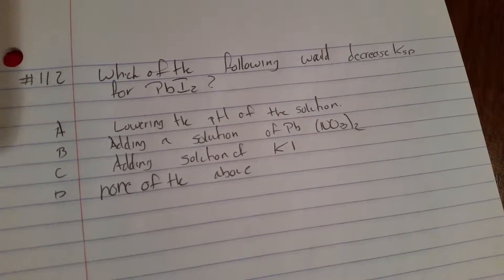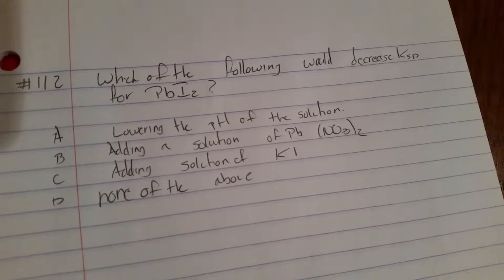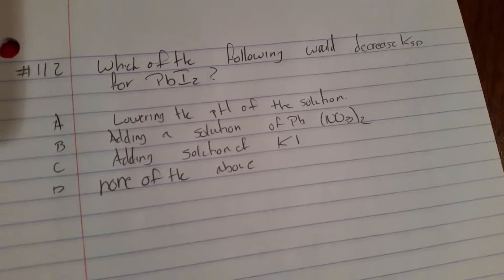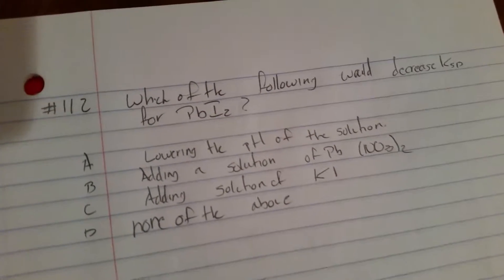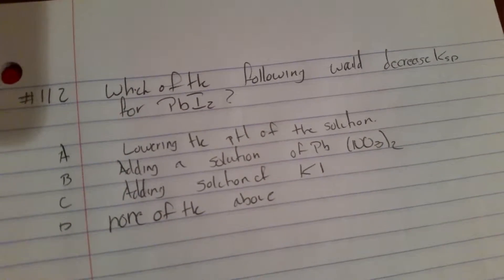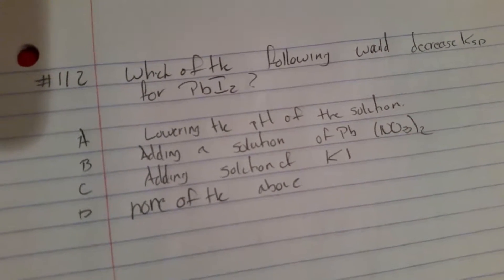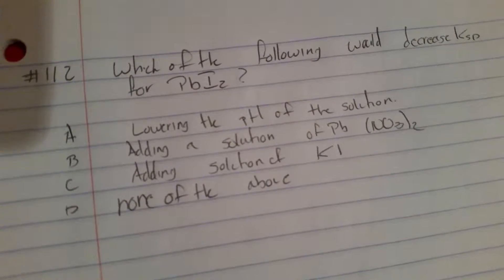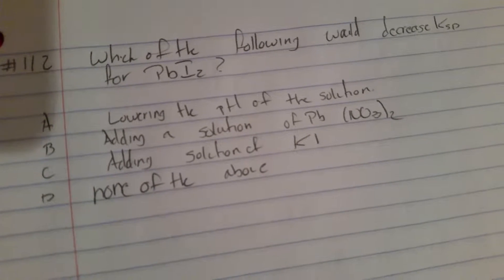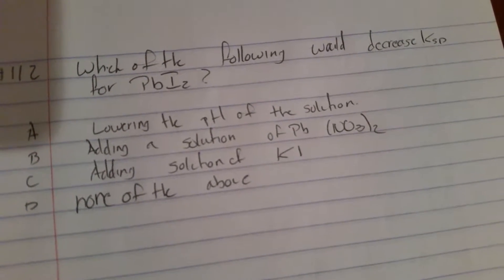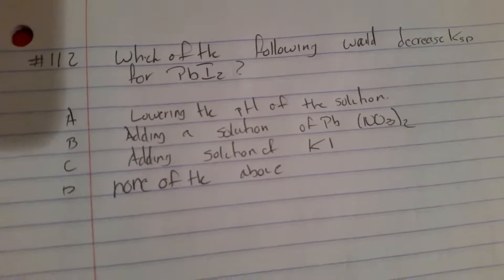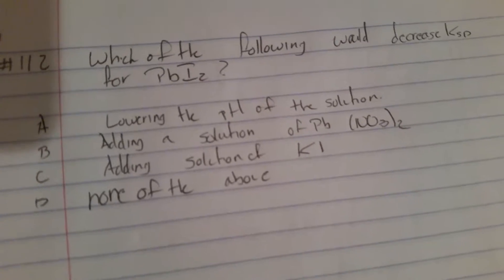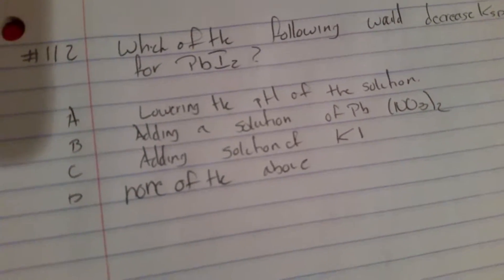Which of the following would decrease the Ksp for PbI₂? A, lowering the pH of the solution; B, adding a solution of Pb(NO₃)₂; C, adding a solution of KI; or D, none of the above.